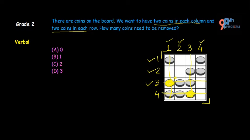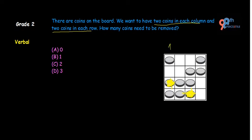Now students, let's count again after removing these 2 coins. In the first column we have 2 coins, in the second column 2 coins, in the third column 2 coins, and in the fourth column 2 coins. Similarly for the rows: the first row has 2 coins, the second row 2 coins, the third row 2 coins, and the fourth row 2 coins. That means we need to remove 2 coins from this arrangement, which means option C is the correct answer. Thank you.